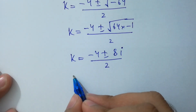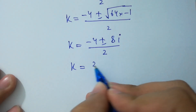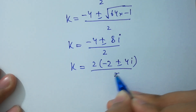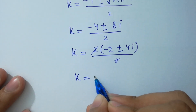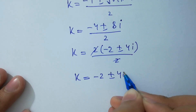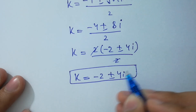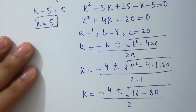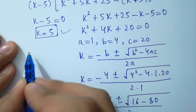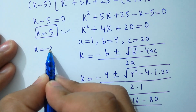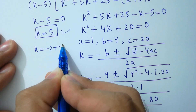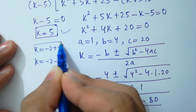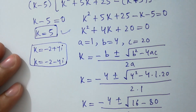Dividing through by 2: k equals minus 2 plus or minus 4i, which is our complex solution. So we have one real solution, k equals 5, and two complex solutions: k equals minus 2 plus 4i and k equals minus 2 minus 4i.